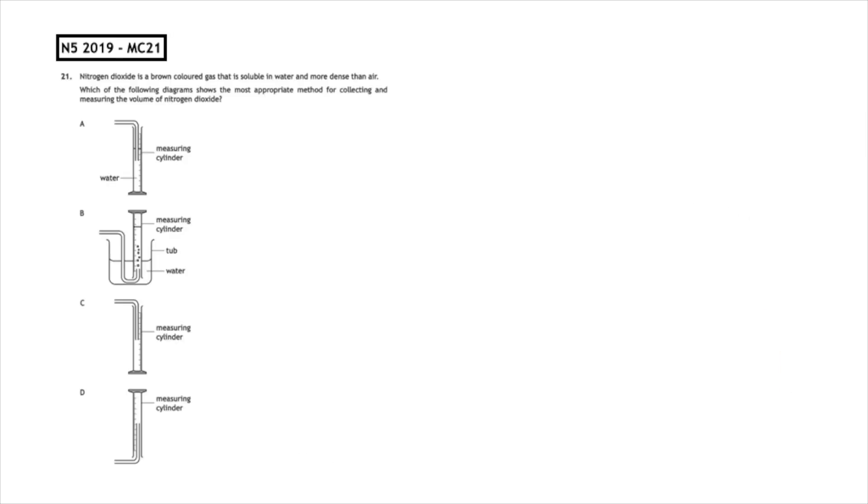This past paper question is from the National 5 2019 multiple choice question 21. Nitrogen dioxide is a brown colored gas that is soluble in water and more dense than air. Which diagram shows the most appropriate method for collecting and measuring the volume of nitrogen dioxide? This question is a bit tricky—naturally you'll think it's got to be an upturned measuring cylinder. However, we can see that the gas is soluble, which means it would dissolve in the water, so answers A and B cannot be correct.